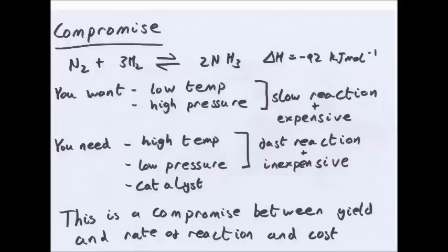It will give you the right amount of yield but it won't do it quick enough. So what you do need is a high temperature to increase the rate of reaction, low pressure to make it inexpensive, and a catalyst to speed up the rate of reaction further. So this is a compromise between yield and rate of reaction and cost. And that's what you have to do.